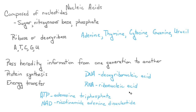RNA is involved in protein synthesis and energy transfer molecules. You have ATP, which is adenosine triphosphate, and contains the molecule adenine. And nicotinamide adenine dinucleotide also contains the molecule adenine. Both of these contain the sugar ribose. And that's all I have for biochemistry and organic chemistry right now.